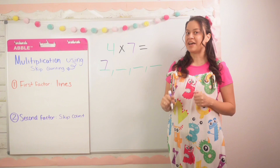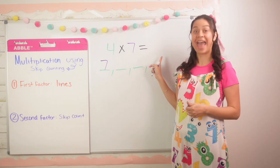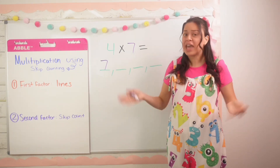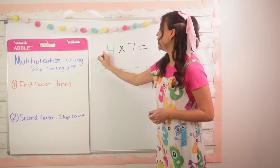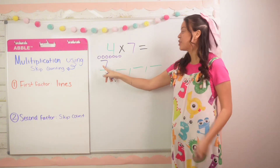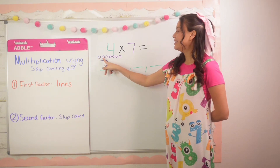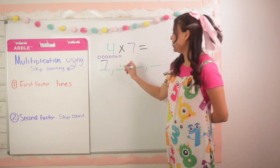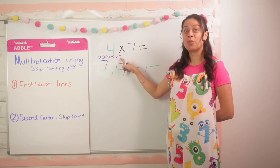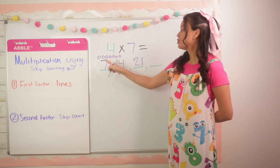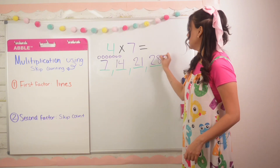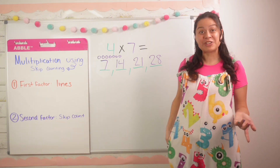If you feel confident skip counting by seven, go ahead and skip count all the way to the end — that is your answer. Or if you feel a little shaky, go ahead and draw seven circles on top. So one, two, three, four, five, six, seven. Starting from seven, I count on: eight, nine, ten, eleven, twelve, thirteen, fourteen — that's the second line — then fifteen, sixteen, seventeen, eighteen, nineteen, twenty, twenty-one — third line — then twenty-two, twenty-three, twenty-four, twenty-five, twenty-six, twenty-seven, twenty-eight. Stop. So four times seven is equal to 28.